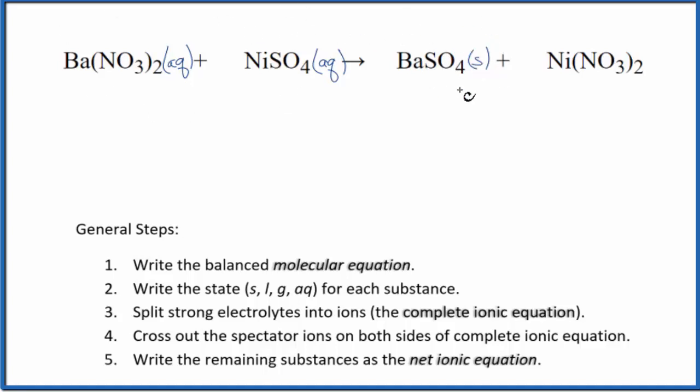These two react, they form this solid, falls to the bottom of the test tube as a precipitate. So this is a precipitation reaction as well. Over here, we have another nitrate that's going to be soluble. So we have our states.